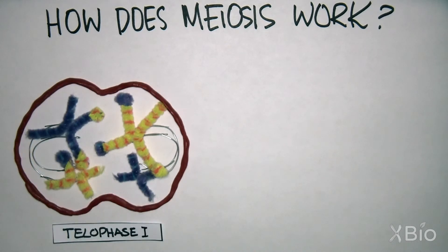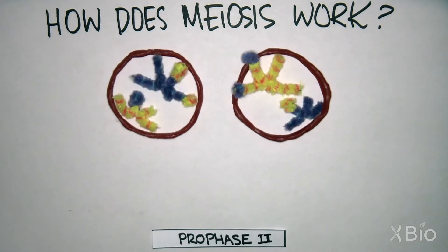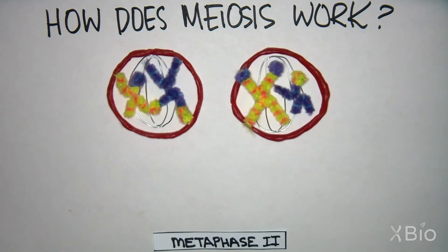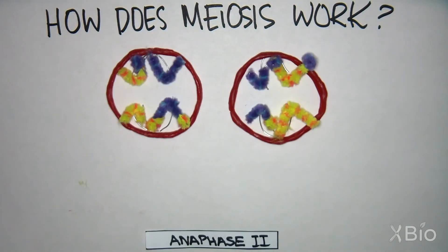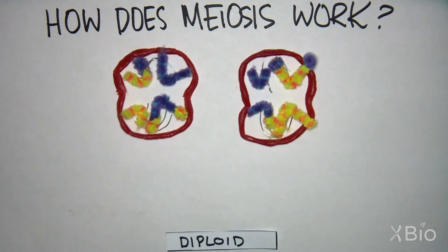Immediately following this first division, there is a second division without any DNA replication. This division reduces the number of each chromosome from two, diploid, to one, haploid.